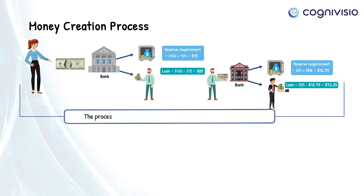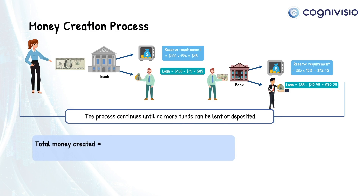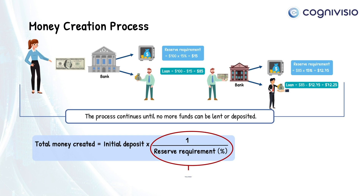The process continues until no more funds can be lent or deposited. The total amount of money created from this process is the sum of all deposits available in the banking system, and is equal to the initial deposit multiplied by one over the reserve requirement — or what is known as the money multiplier.